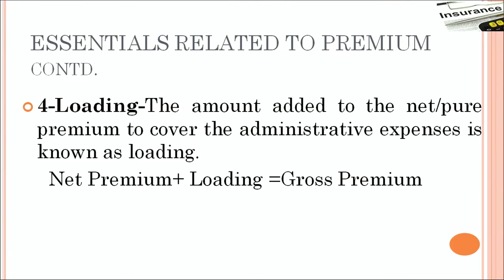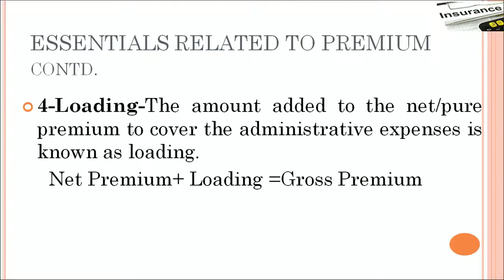Then we have further loading, which is the amount added to the net or pure premium to cover administrative expenses. These administrative expenses could include printing charges, documentation, printing of your policy document, and sending renewal premium notices and reminders. All these administrative expenses are loaded or added to the premium, and that comes to be known as the gross premium. Net premium together with the loading makes the gross premium.